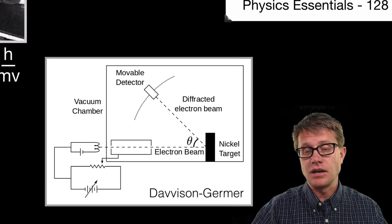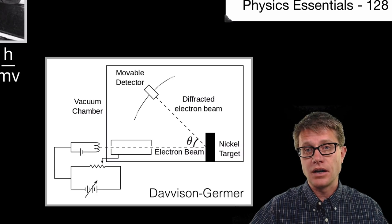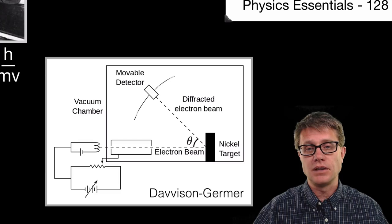Davison and Germer showed interference as electrons were interfering with one another. Electrons are matter and they were behaving like waves.